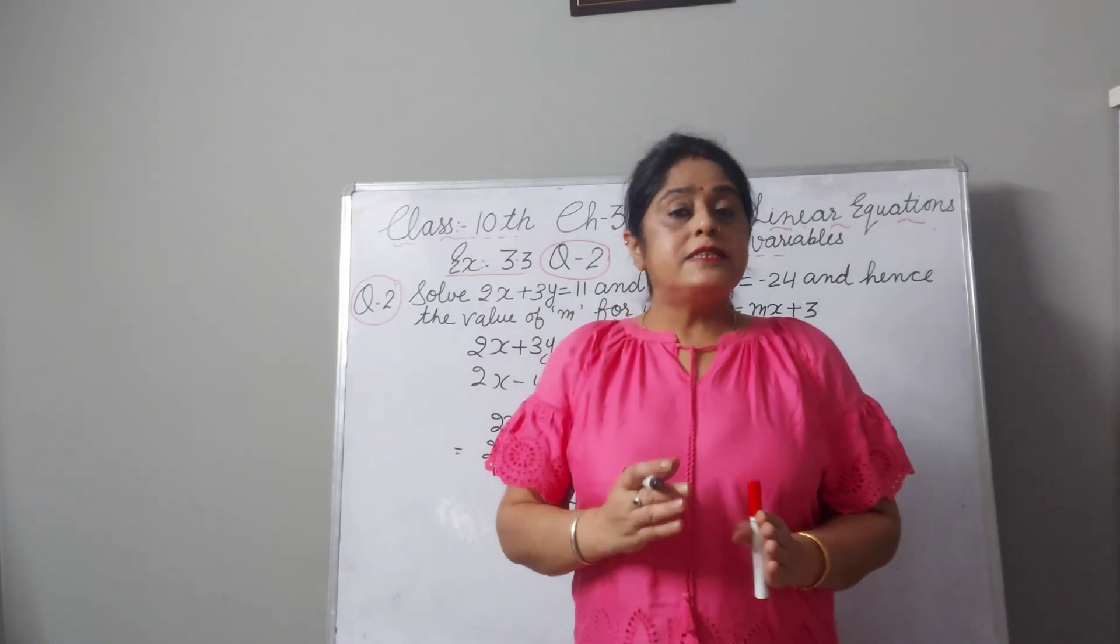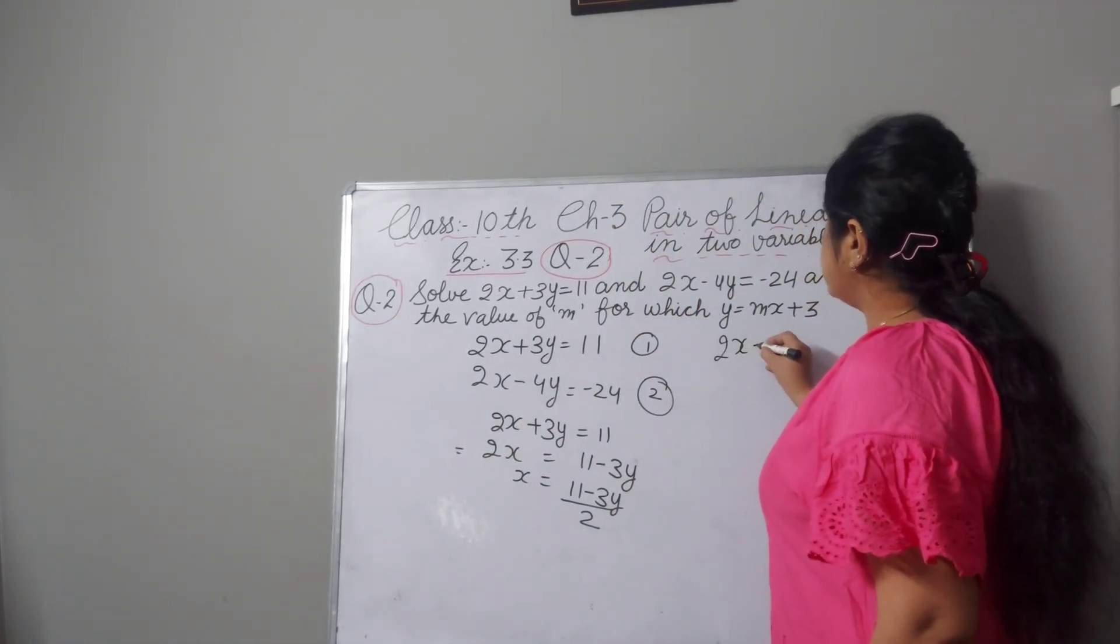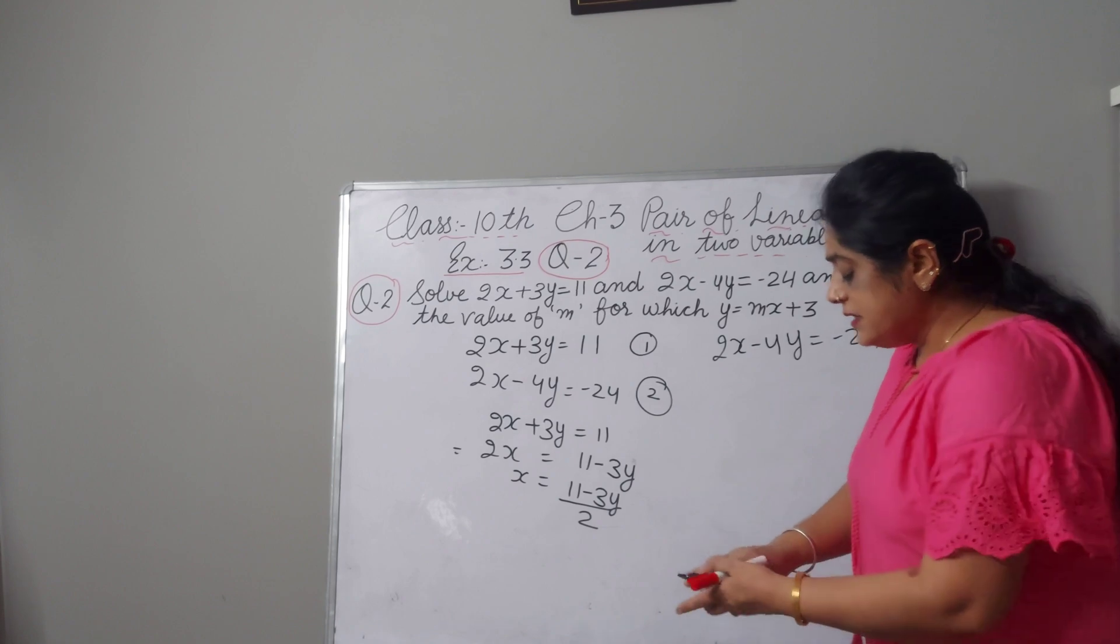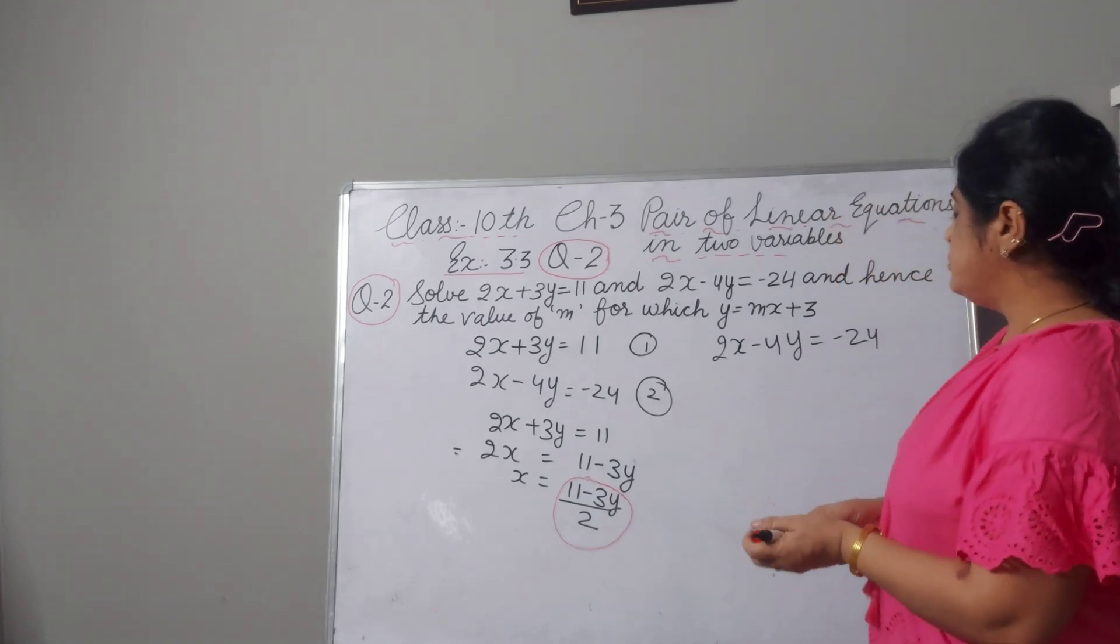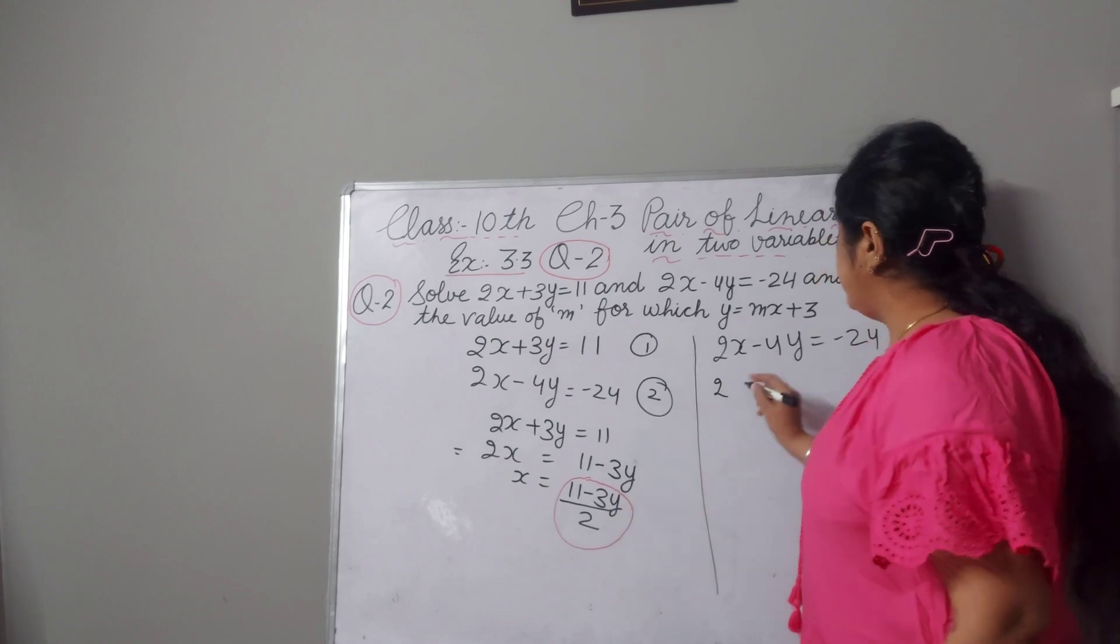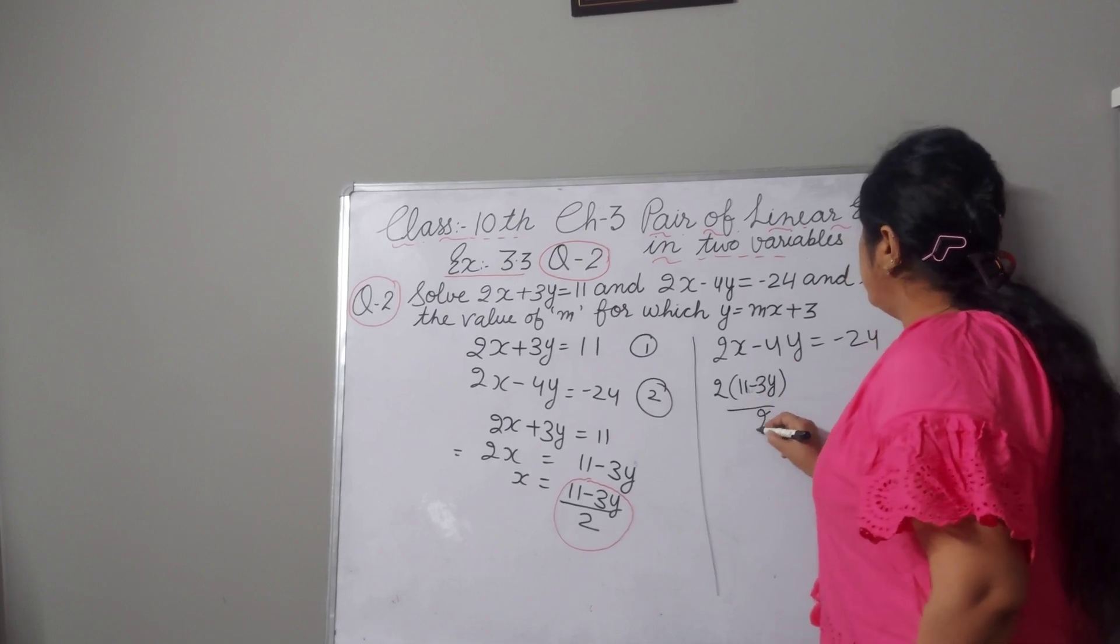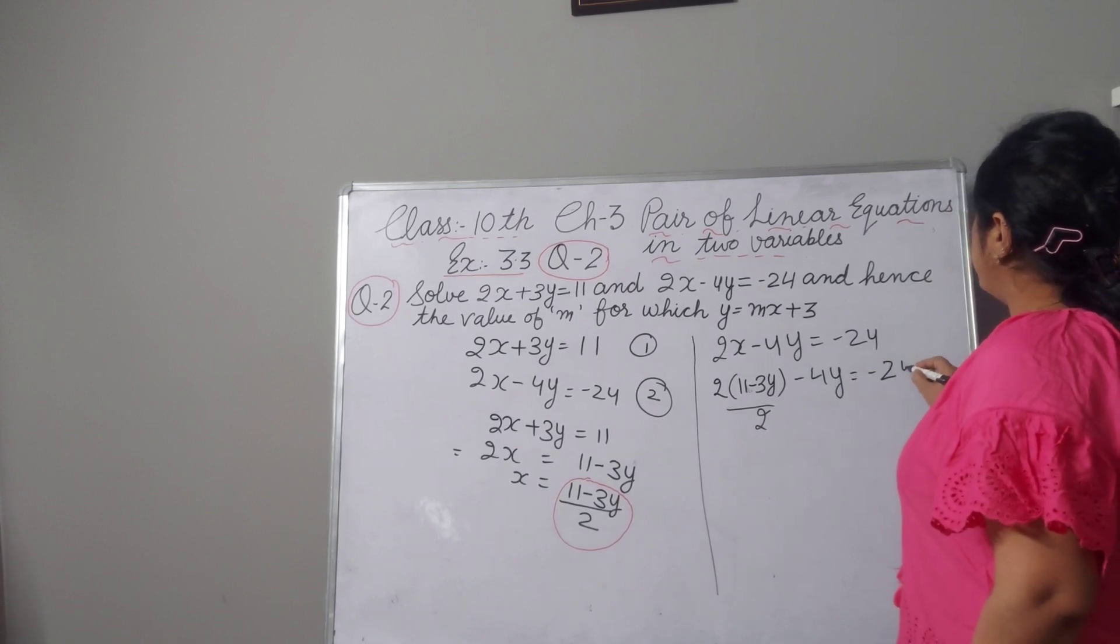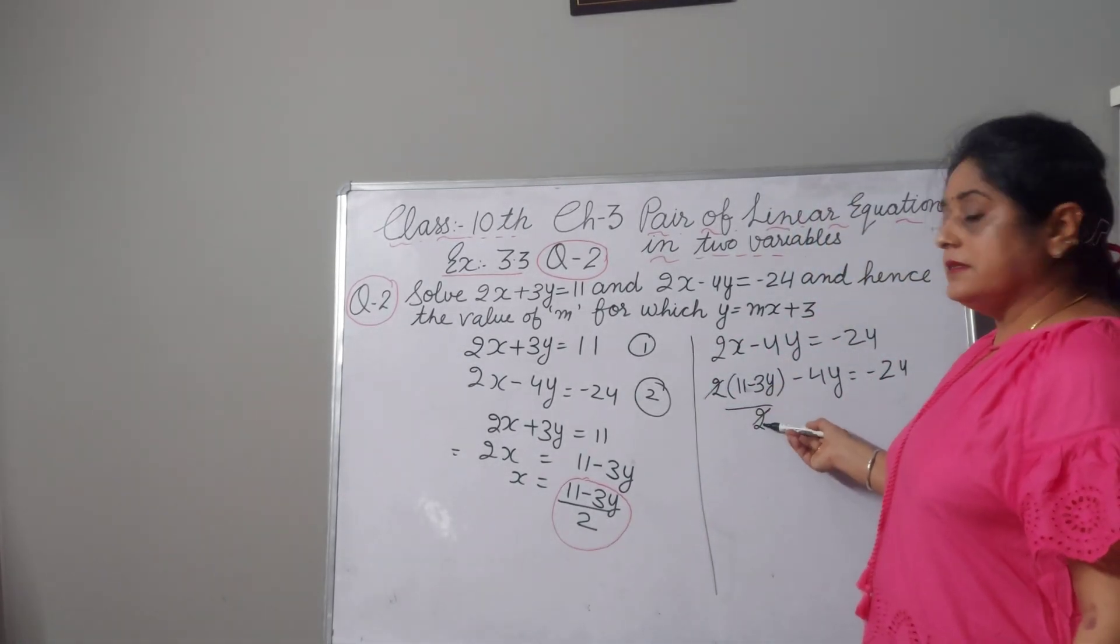This value of x we will substitute in equation number 2. Now I am writing equation number 2, 2x minus 4y equal to minus 24. Now this value of x which is 11 minus 3y upon 2, we will substitute here. 2 in place of x, I will write 11 minus 3y upon 2 minus 4y equal to minus 24.